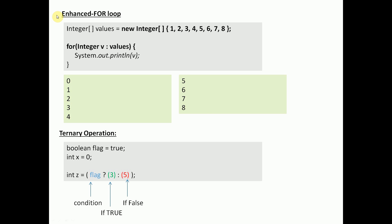Then we have our enhanced for loop, and this is a very useful way to iterate through an array. Let's open up with an integer array — we're calling it 'values' and we're storing into it these integers: 1, 2, 3, 4, 5, 6, 7, and 8. Now if you remember from our discussion on arrays, we start with a 0 index. So index 0 is where 1 occurs, 2 occurs at position 1, 3 occurs at position 2, 4 at position 3, and 8 occurs at position 7.